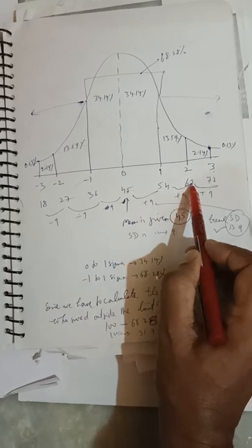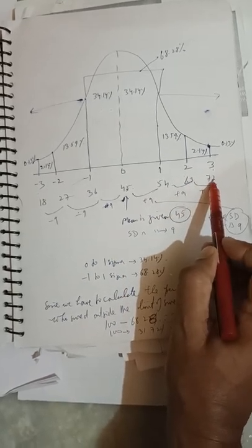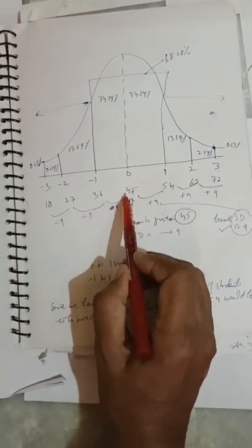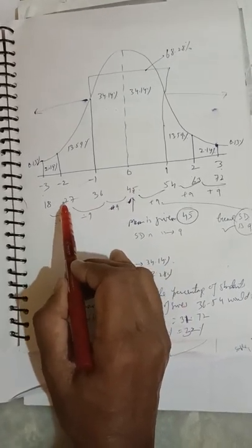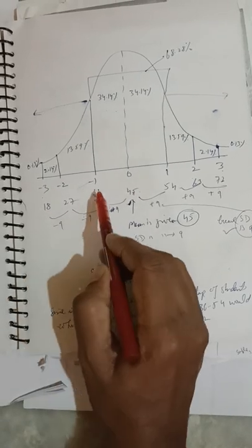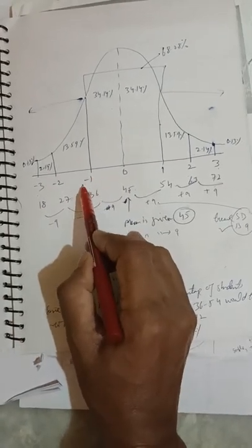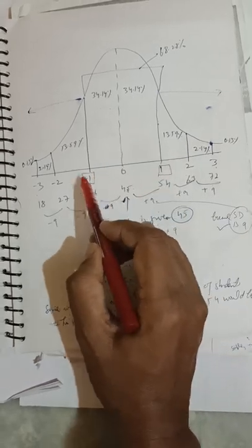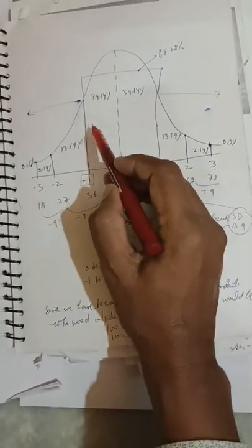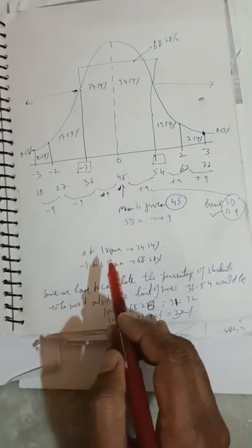54, plus 9 is 63, plus 9 is 72. On the left side, 45 - 9 = 36, 36 - 9 = 27, and 27 - 9 = 18. Now, the value given is from -1 sigma to +1 sigma. We need outside of this, meaning the value from -1 sigma to +1 sigma is 68.28 percent.